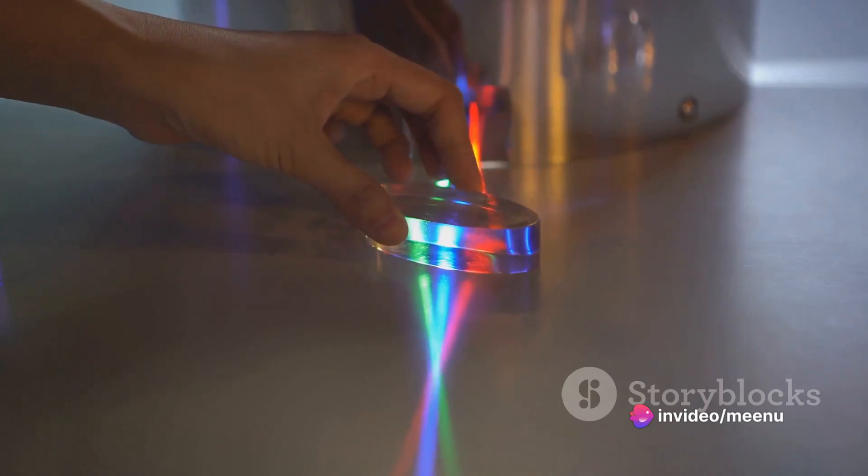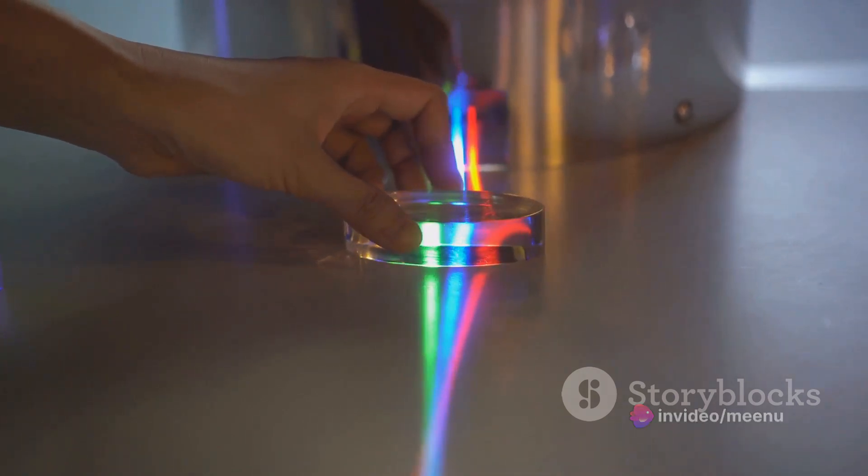This dispersion occurs because each color has a different wavelength. Shorter wavelengths bend more.